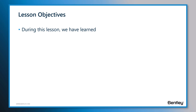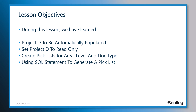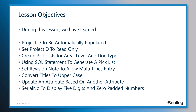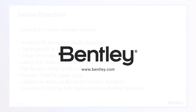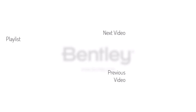During this lesson, we have learned how to set up an attribute to be automatically populated with the right information, as well as setting it up to read only so users cannot manually change it. We also learned how to create picklists for a number of attributes, including using SQL statements to generate them. We also learned how to set up an attribute to allow multi-line entry as well as converting user input to uppercase, how to update an attribute automatically based on another attribute, and how to set up the Serial Number attribute to display a five-digit number padded with zeros. If you want to see more like it, please consider subscribing to this and Bentley's other channels. Thank you and see you next time.